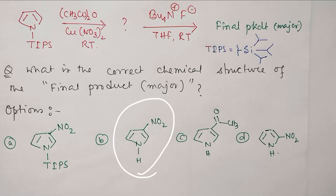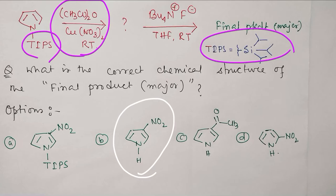If this question comes in your exam and you are confused, you need to think that TIPS has lots of bulky groups that will create steric hindrance. Otherwise, why use this protection? So C2 substitution is very difficult. Another thing: we used tetrabutyl fluoride, so it will remove silicon. This is not possible because nitration.